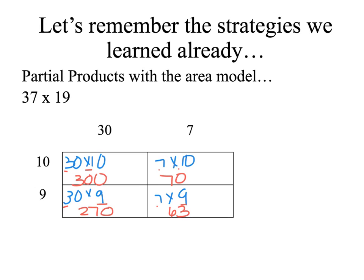Now I add my four partial products 300, 270, 70 and 63 to find my final answer. 0 plus 3 is 3. 7 plus 6 is 20, so I need to regroup the two 10s. And 3 plus 2 plus 2 is 7. So 37 times 19 is 703.